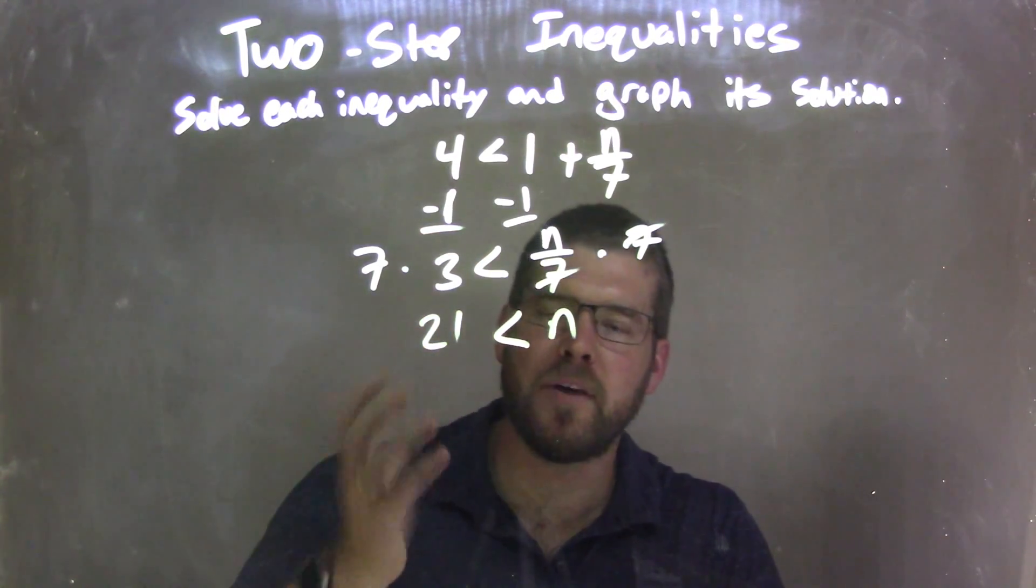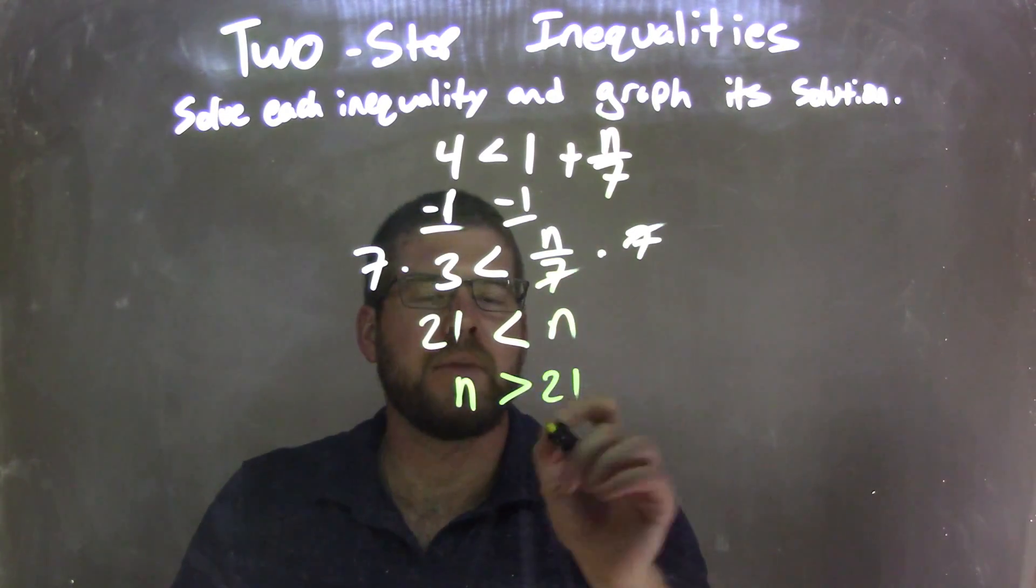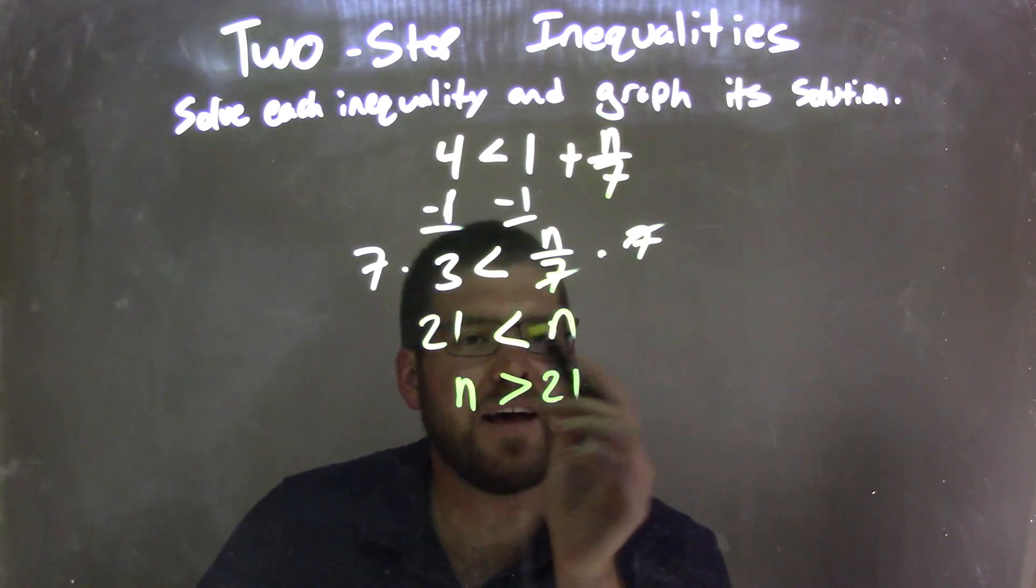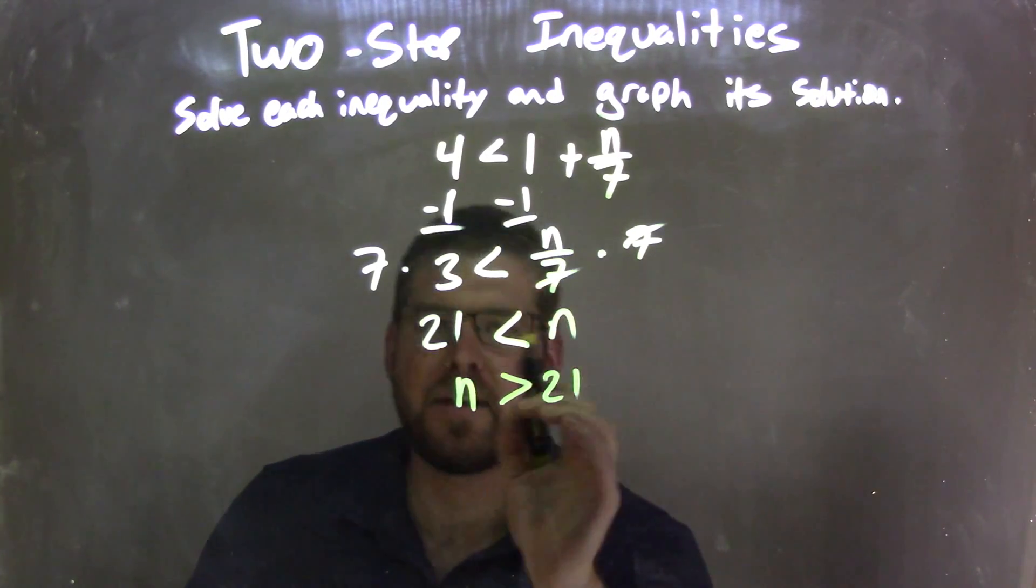Now I like to rewrite this so n comes first, so I have n now is greater than 21. So before I had 21 is less than n, similar statement, n is greater than 21. Same set of numbers we're dealing with.